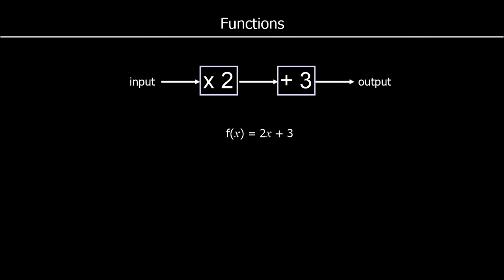A function is like a machine. We put an input into the function, and then an output comes out of the function. For every input, there's one output. So if we put 5 into the machine, in this case we multiply by 2 and then plus 3, so we get 13 out of the machine.